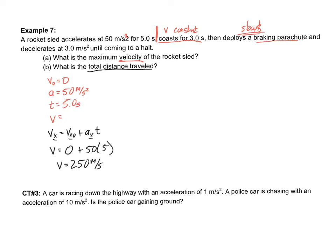Then it says, what is the total distance traveled? Okay, so we're going to need to find the distance in three individual pieces. First, we need the distance during the acceleration phase. Then we need the distance during the coasting phase. And then we need the distance traveled during the braking phase. All right, so let's see if we can get each of those.